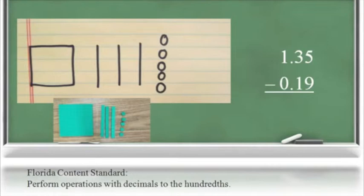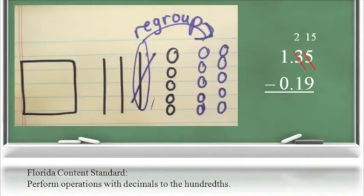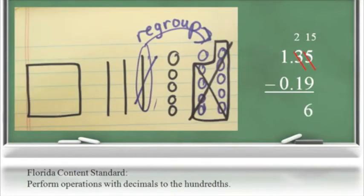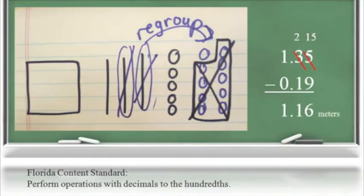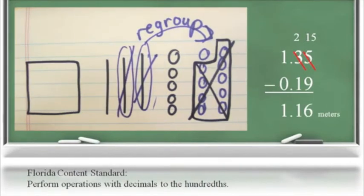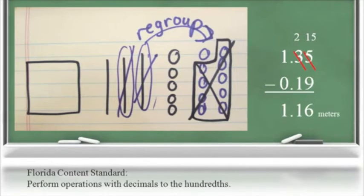By crossing out one of the tenths in our model and regrouping it as ten hundredths, we see what we are doing in the standard algorithm. We then have enough hundredths to subtract nine in the hundredths place. We can then subtract one tenth from the two tenths, which gives us our solution of one and sixteen hundredths meters.